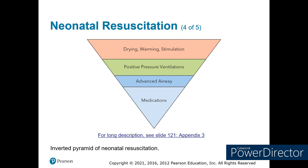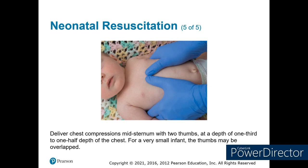Here are circumferential compressions — now the preferred method for infants per American Heart guidelines. Hands behind the chest, two thumbs in the center, pushing down one third the depth of the chest at about 120 beats per minute.